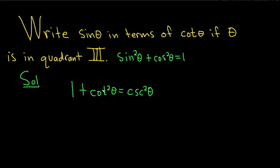The reason is we already have a cotangent here, and we actually do have a sine, because cosecant is 1 over sine. So let's write cosecant as 1 over sine. We have 1 + cot²θ = 1/sin²θ.